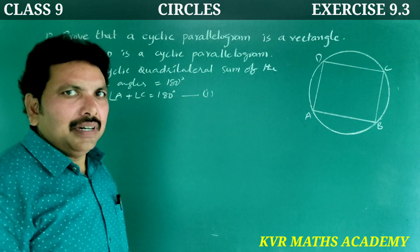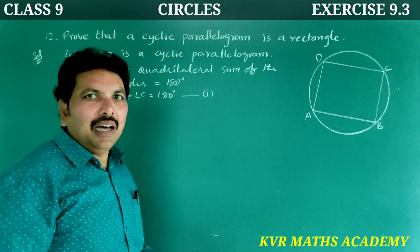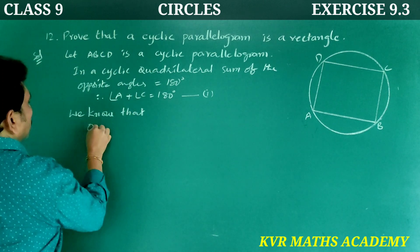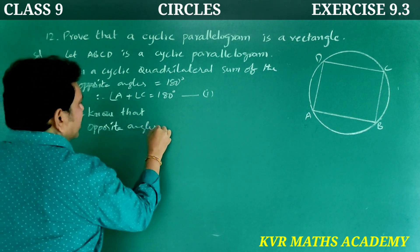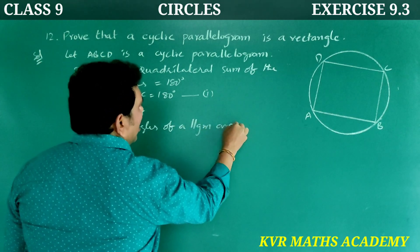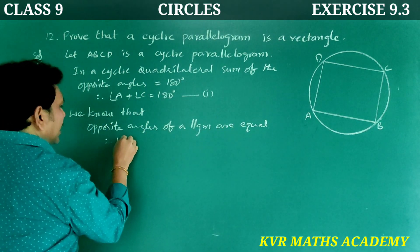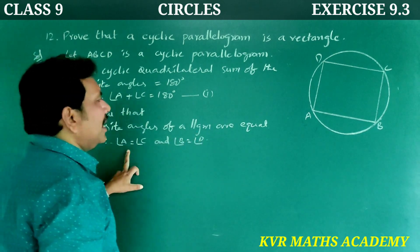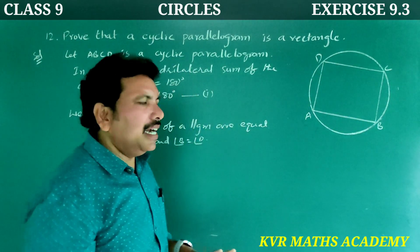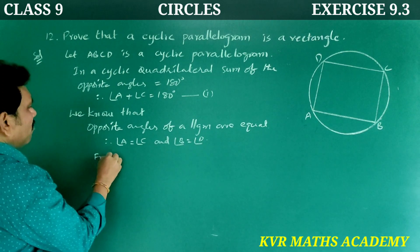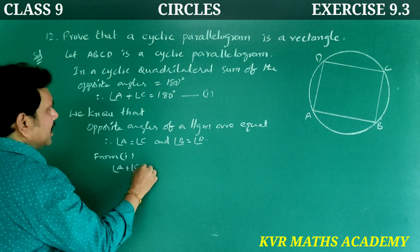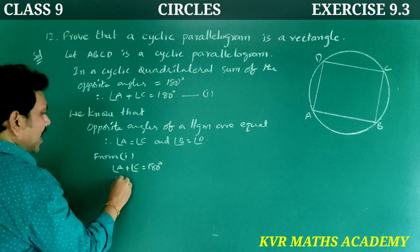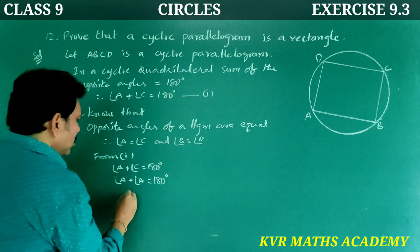But ABCD is a parallelogram, so opposite angles of a parallelogram are equal. We know that opposite angles of a parallelogram are equal. Therefore angle A is equal to angle C, and angle B is equal to angle D.